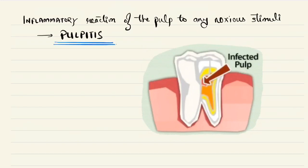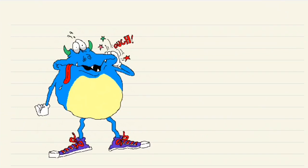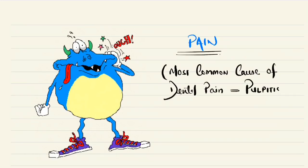Pulpitis is basically the inflammation of the pulp tissue. Now this inflammation of the pulp tissue leads to increase in intrapulpal pressure. This increase in intrapulpal pressure will lead to pain or dental pain. The most common cause of this dental pain is pulpitis or the inflammation of the pulp.